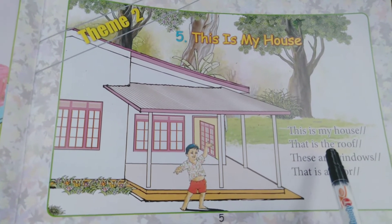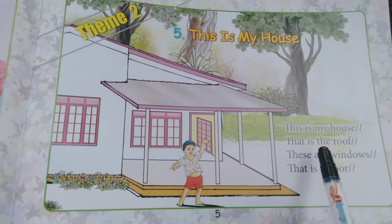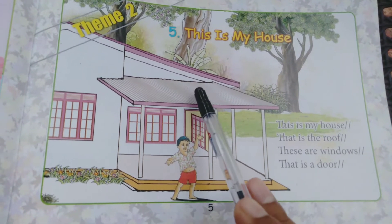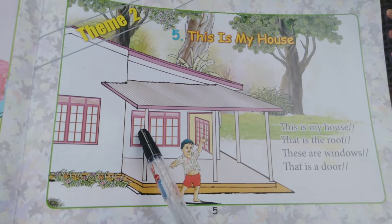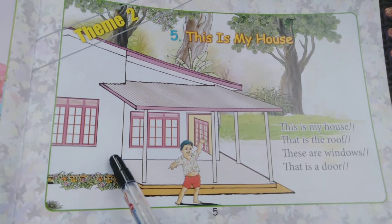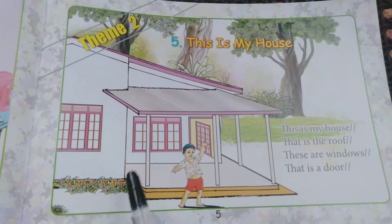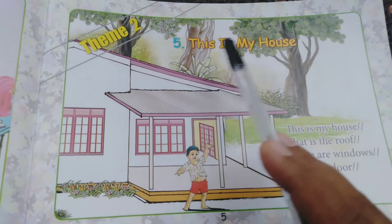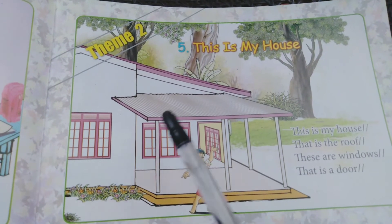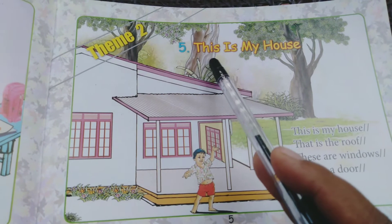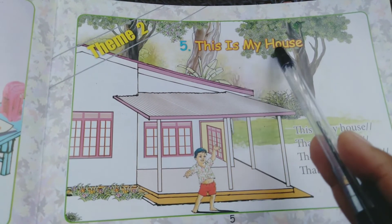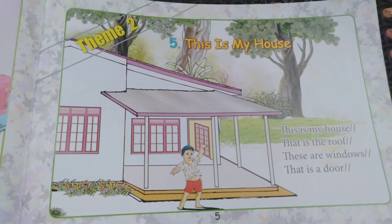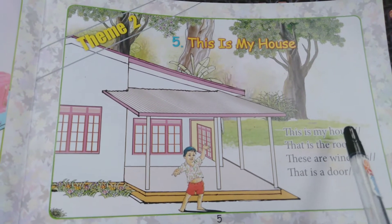There are parts of the house. They have mentioned the parts of the house: roof, windows, door, wall. Everything is there in this house. This is my house. Today we have learned the fifth lesson, this is my house.